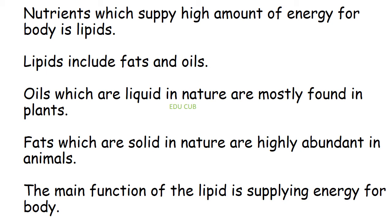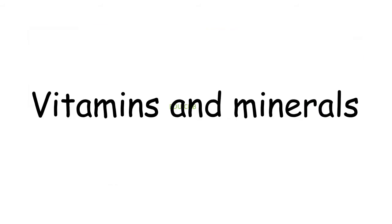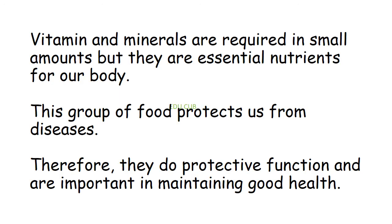The next nutrient type is lipids. Lipids supply a high amount of energy to the body and include fats and oils. Oils, which are liquid in nature, are mostly found in plants, while fats, which are solid in nature, are highly abundant in animals. Foods rich in lipids include egg yolk, curd, butter, coconut, and ginger.